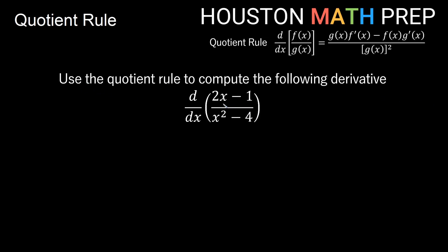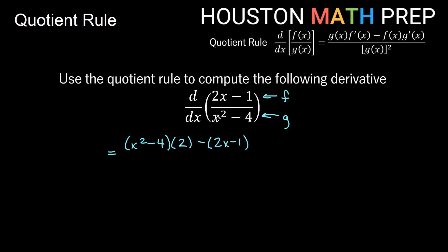Let's look at another one. We're going to do the derivative of 2x minus 1 over x squared minus 4 with respect to x. My f on top is my high function, g down here is my low function. Low d high: low is x squared minus 4, d high is the derivative of 2x minus 1 — derivative of 2x is 2, derivative of negative 1 is 0 — so that's 2. Minus high d low: high function is 2x minus 1, d low is the derivative of x squared minus 4 — the 2 comes out front giving 2x, and the constant's derivative is zero. All over the square of what lies below, which is x squared minus 4, all squared.